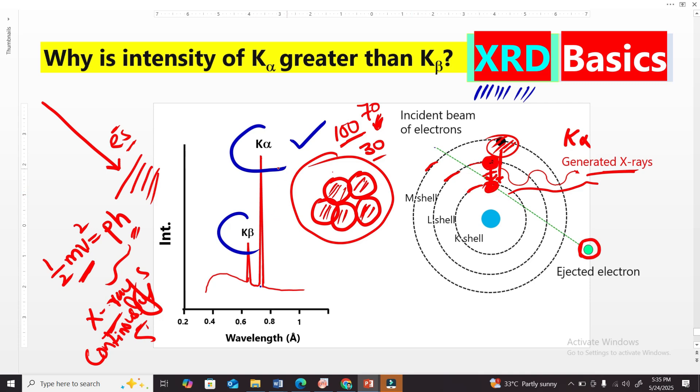This is why K-alpha has higher intensity. And we know intensity basically means the area under the curve. So this means that both curves have the same shape. So this means that this intensity is higher for K-alpha. We know that the area under the curve is basically intensity.